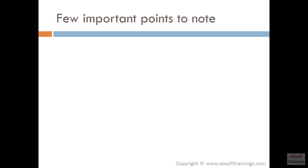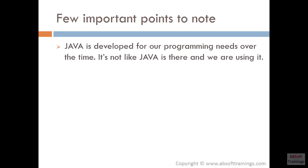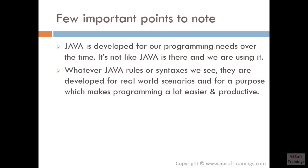Before starting, I have a few important points to discuss with you. The first one is: Java is developed for our programming needs over time. When Java was created, there was a need for a much more powerful and high-level object-oriented programming language, and that was the reason Java was created. Over time, it has been improved and enhanced with more and more features.